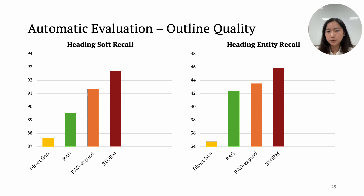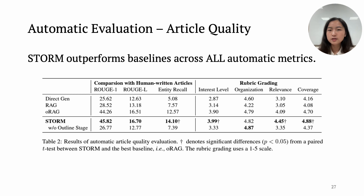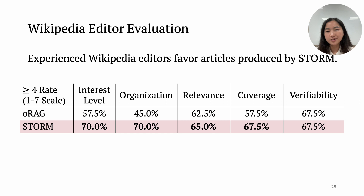We found STORM significantly outperforms direct generation and RAG in terms of outline quality. We also conduct ablation studies removing perspective-guided question asking and the multi-turn conversation simulation, and results dropped compared to the full STORM system. For article quality, STORM outperforms baselines across all automatic metrics. Here, ORAG refers to outline-driven retrieval-augmented generation. Since automatic evaluation of long-form generation is itself challenging, we also conduct human evaluation by collaborating with experienced Wikipedia editors, who rate articles produced by STORM higher compared to the best baseline across different aspects.